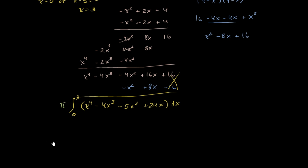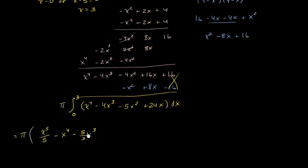Now we just have to take the antiderivative. This is going to equal pi times: the antiderivative of x to the fourth is x to the fifth over 5; the antiderivative of 4x to the third is minus x to the fourth; the antiderivative of negative 5x squared is minus 5 thirds x to the third; and the antiderivative of 24x is plus 12x squared.